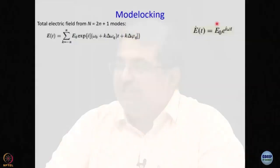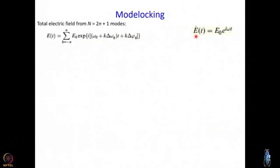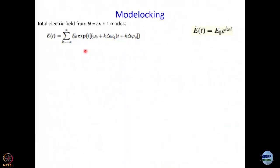We are going to work with plane waves where we say the electric field is a function of time given by E₀ — the maximum amplitude — multiplied by e^(iωt). What is ω? Angular frequency. What is the relationship between ω and ν? ω = 2πν. Now, I have locked these modes together and the number of modes I'm working with is capital N = 2n + 1.